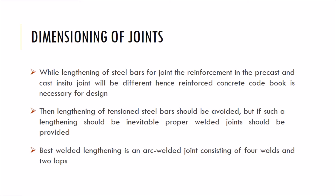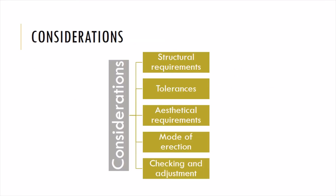Moving on to the dimensioning of joints — if we are going to connect two members by lengthening the steel bars, it may result in failure in some cases. To avoid this, instead of lengthening steel bars, you can go for proper welding. For example, arc welded joints with four welds and two laps is the best practice, which helps avoid lengthening of tensile steel bars and results in a good form of joint connection.